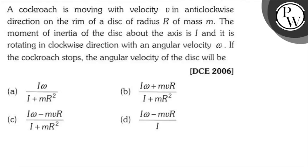Hello, let's see the question. A cockroach is moving with velocity v in anticlockwise direction on the rim of a disk of radius R and mass m. The moment of inertia of the disk about the axis is I and it's rotating in clockwise direction with angular velocity omega. If the cockroach stops, the angular velocity of the disk will be.